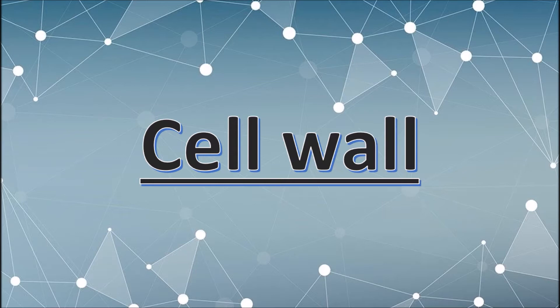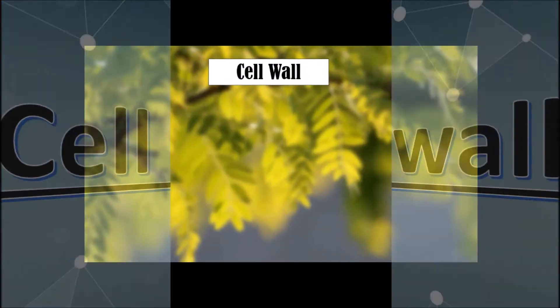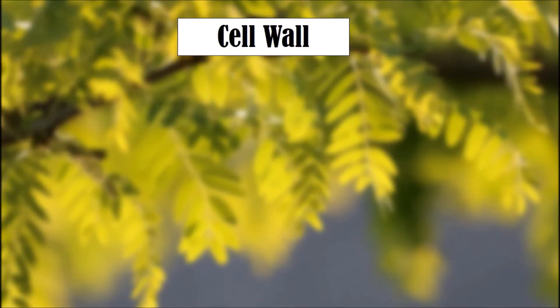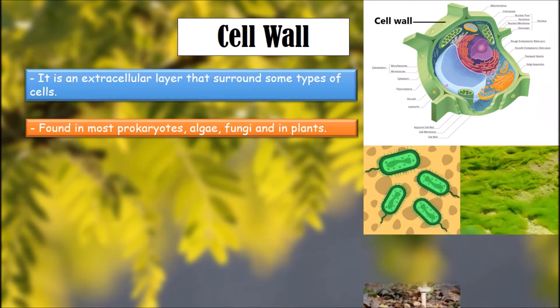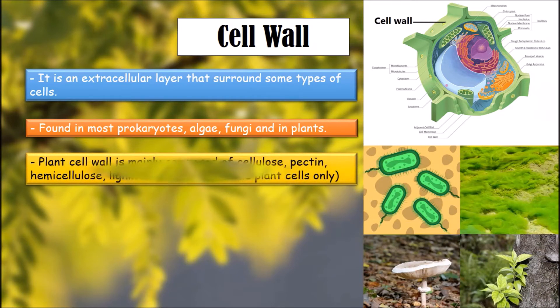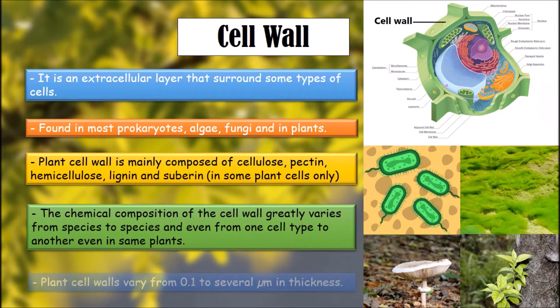That is the cell wall. Cell wall is an extracellular structural layer that surrounds some types of cells. It is found in most prokaryotes, algae, fungi, and in eukaryotes such as plants.